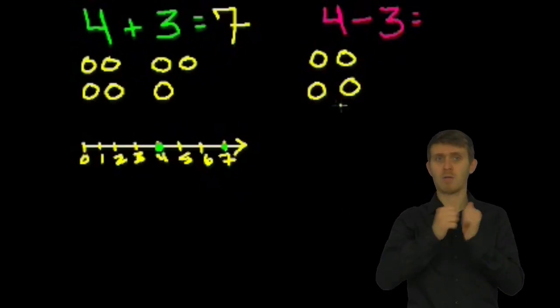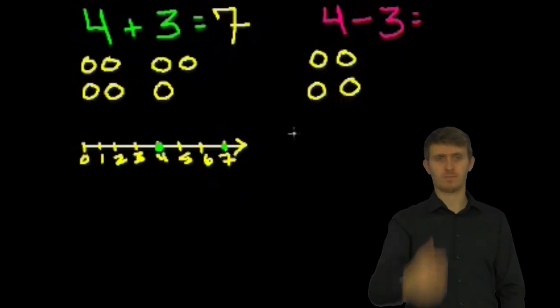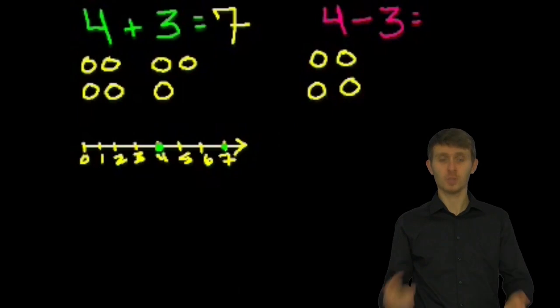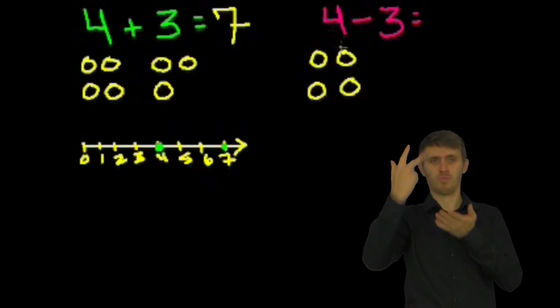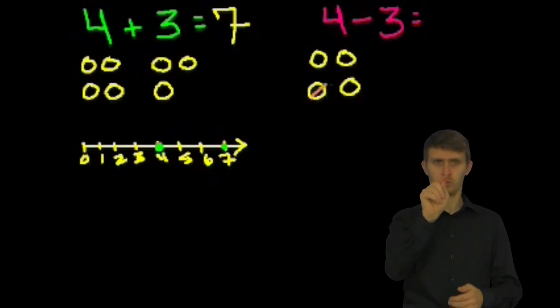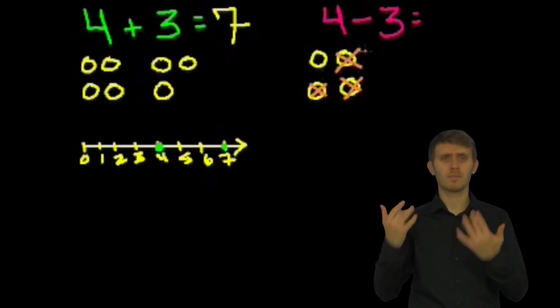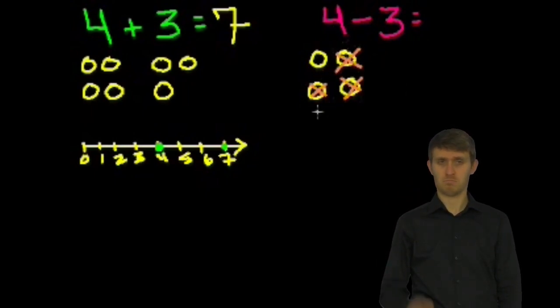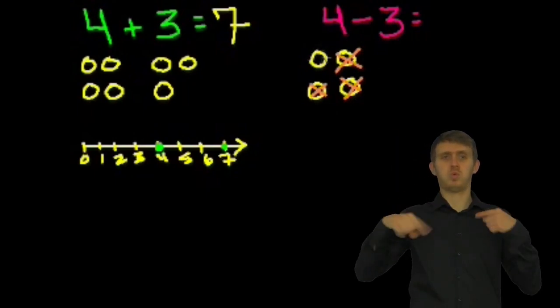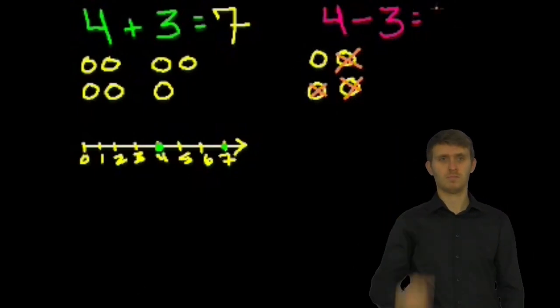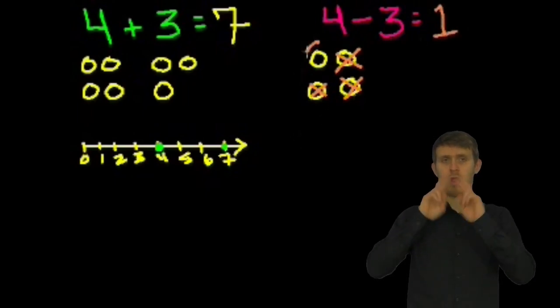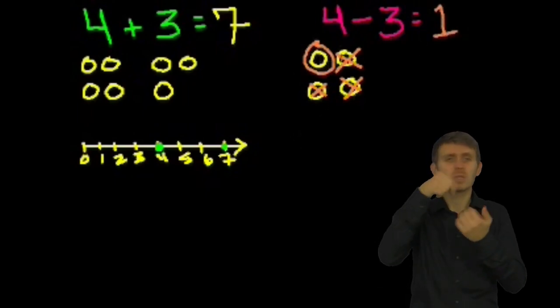If I'm subtracting 3, if I'm saying minus 3, instead of adding these 3 here and getting 7, I'm going to take 3 away. So maybe I'm eating them. Or maybe I'm giving them to you in exchange for watching these videos. So to take away 3 from this 4, let's say this one goes away, this one goes away, and this one goes away. How many lemons would we have left? Well, this is the only one that I haven't crossed out. So we would have one lemon left.